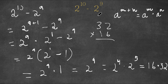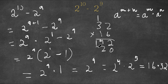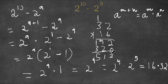For 32 times 16: 2 times 6 is 12, carry the 1; 6 times 3 is 18, plus 1 is 19; then we add our 0; 1 times 2 is 2; 3 times 1 is 3; 2 plus 0 is 2; 9 plus 2 is 11, carry the 1; 3 plus 1 plus 1 is 5. So our final answer is 512.